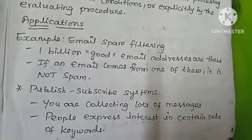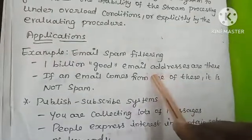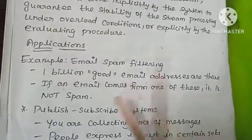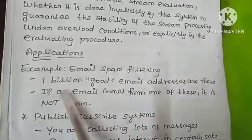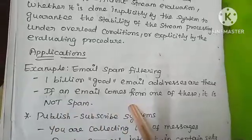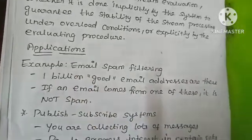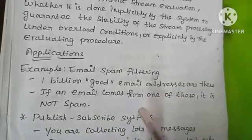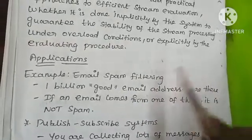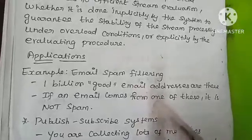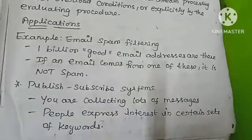For example, one billion good email addresses are stored. If an email comes in that is spam, out of one million emails, the spam is filtered out through authentication. With one billion addresses, spam emails are identified and filtered.